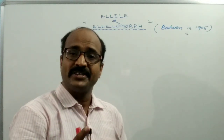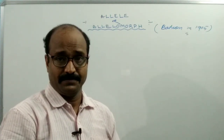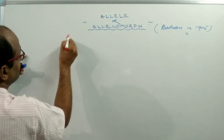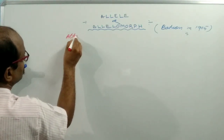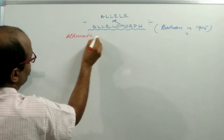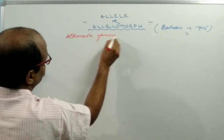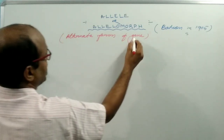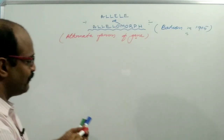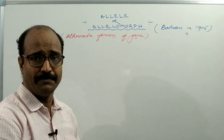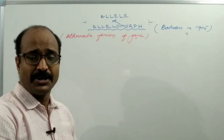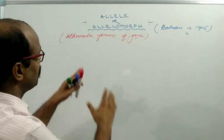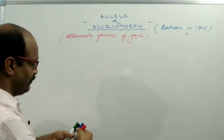What is the simplest definition of Allele? The simplest definition may be: the alternate forms of a gene are known as Alleles. It means the gene has different forms. But according to Mendel, the gene has two forms.